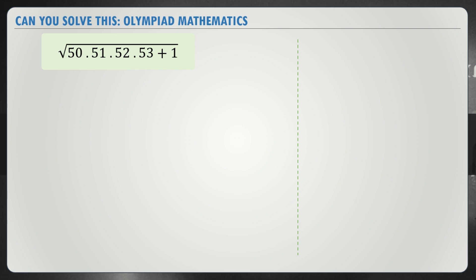50 times 51 times 52 times 53. So this can also be written as 50 into 50 plus 1 into 50 plus 2 into 50 plus 3 plus 1 and we need the square root of the entire number.